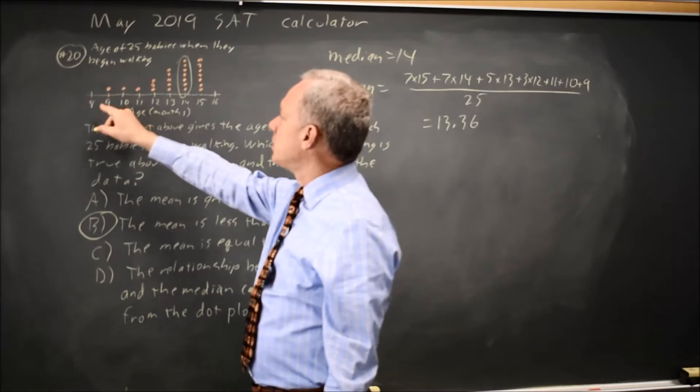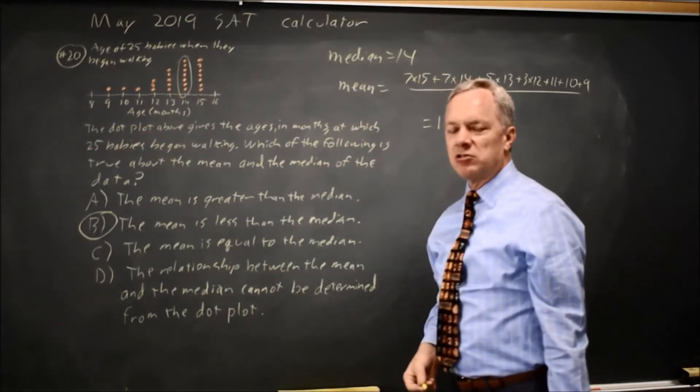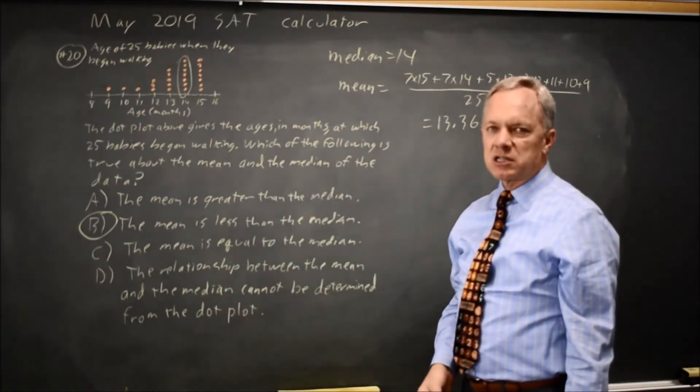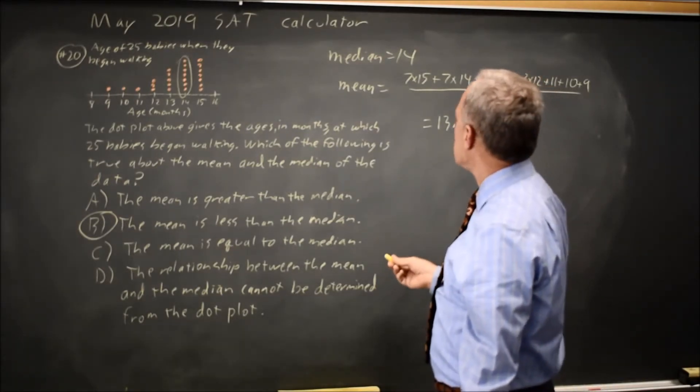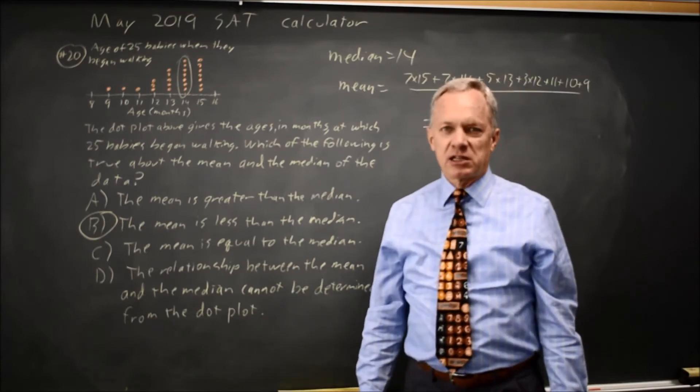So the mean should be less than the median because we are skewed left with a long tail on the left and no tail on the right. So the mean should be less, which is what we found by actually calculating it.